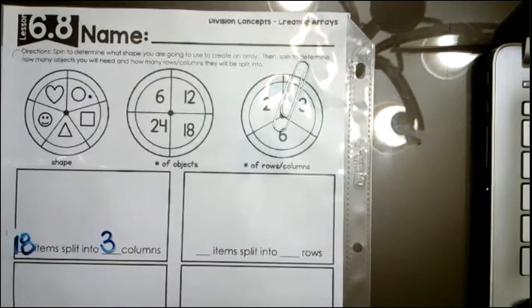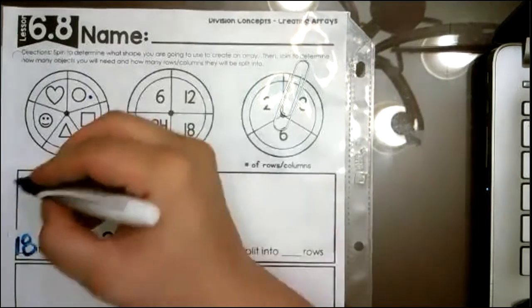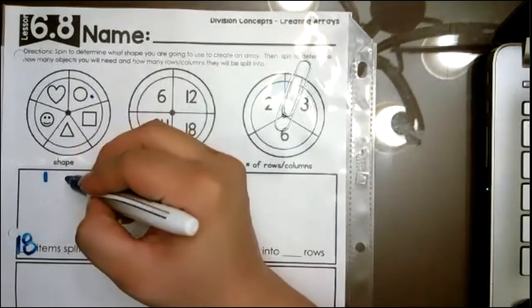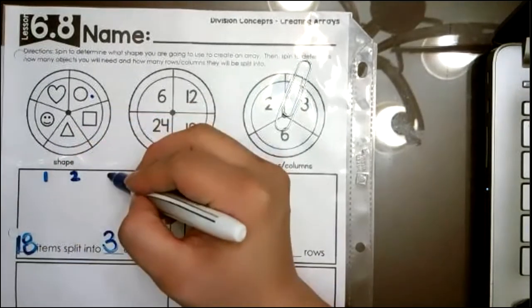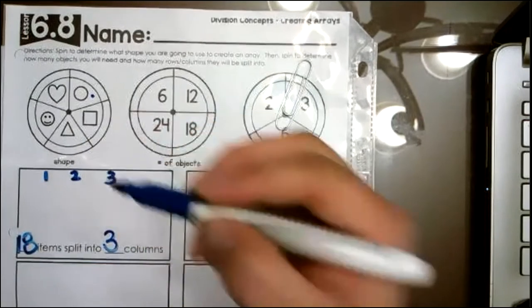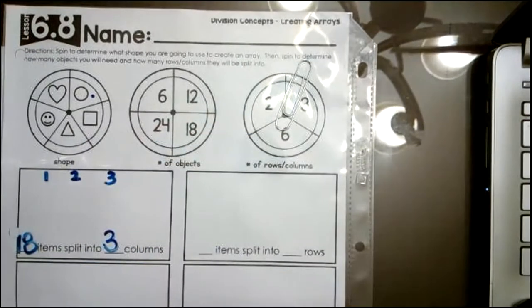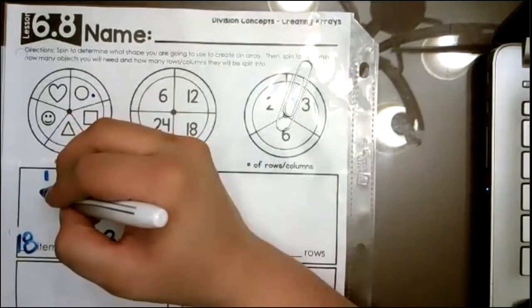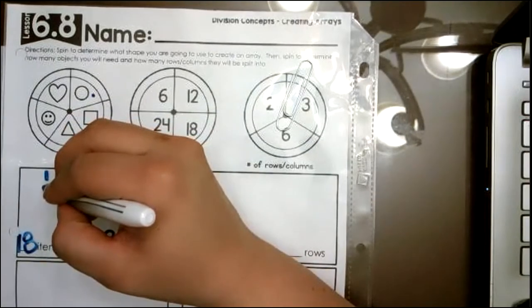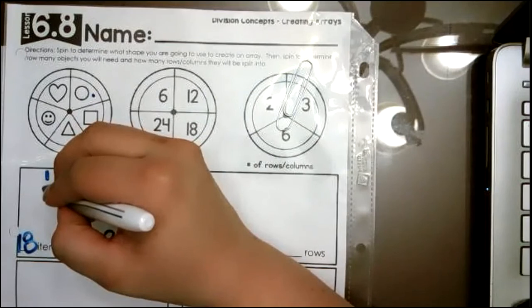And I know that I am going to draw circles for my array to create this array. So what's the first thing we do again, friends? Right. We number our columns or rows. So one, two, and three. So the number of items that is split into three columns is 18.